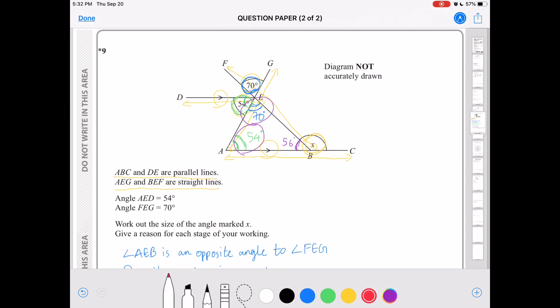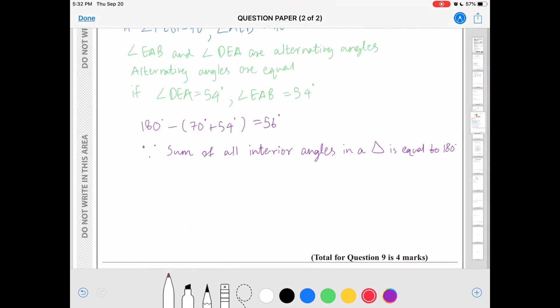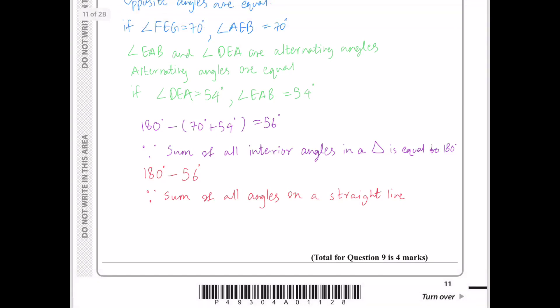Lastly, to find X, I will take away 56 degrees from 180 degrees because the sum of all angles on a straight line is equal to 180 degrees. So 180 degrees minus 56 degrees is 124 degrees. So that is equal to X.